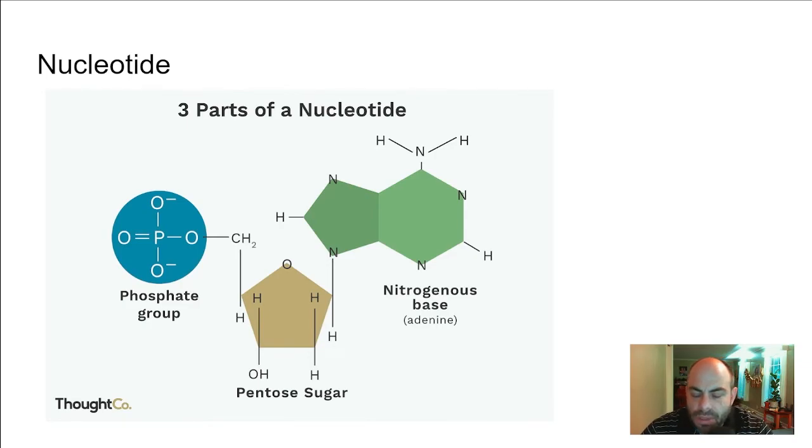The pentose sugar. Pentose sugar is a fancy way of saying a five-carbon sugar. And so the second part of a nucleotide is a five-carbon sugar. And a nucleotide is what makes up nucleic acids. I don't know if I said that, so if you didn't get that down, nucleotide is the monomer of nucleic acids made up of phosphate, a pentose sugar or a five-carbon sugar, and a nitrogenous base.